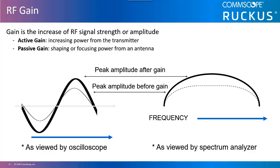Passive gain is accomplished by focusing the RF signal by using an antenna. Antennas are bi-directional passive amplifiers that do not require an external power source. Instead, antennas focus the signal more powerfully in one direction than in another. Gain can be viewed with either an oscilloscope or a spectrum analyzer.